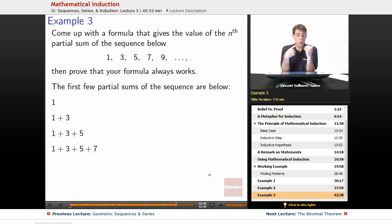Come up with a formula that gives the value of the nth partial sum of the sequence below: 1, 3, 5, 7, 9, then prove that your formula always works. The first few partial sums of the sequence are below. So our first partial sum would be just adding 1 together, so that's 1.